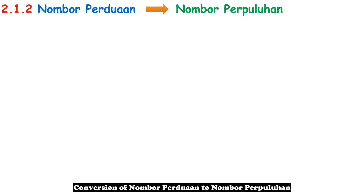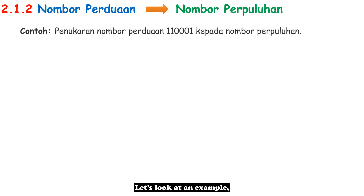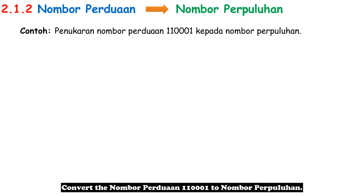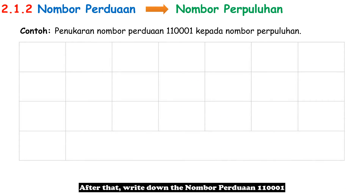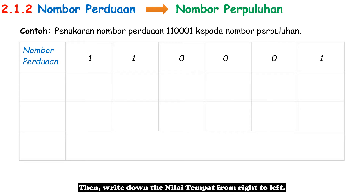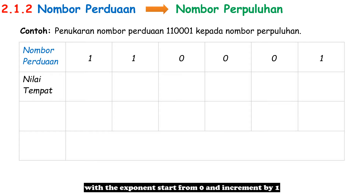Conversion of Nombor Perduaan to Nombor Perpuluhan. Let's look at an example: convert the Nombor Perduaan 1100001 to Nombor Perpuluhan. First, draw out a table. Write down the Nombor Perduaan 1100001, then write down the Nilai Tempat from right to left. The Nilai Tempat for Nombor Perduaan is base 2, with the exponent starting from zero and incrementing by one.